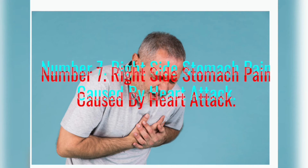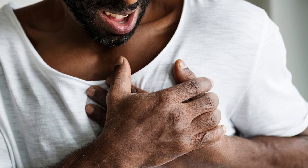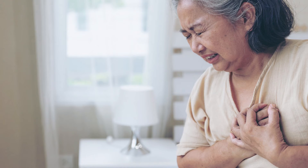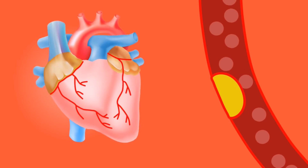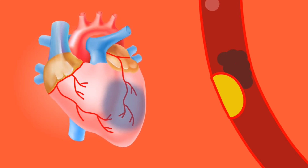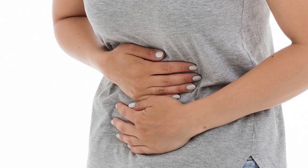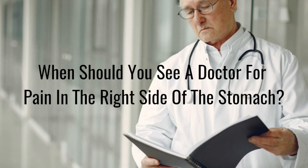Number seven: right side stomach pain caused by a heart attack. A heart attack, also known as myocardial infarction or MI, is the damage and death of heart muscle from the sudden blockage of a coronary artery by a blood clot. Blockage of a coronary artery deprives the heart muscle of blood and oxygen, causing injury to the heart muscle. In addition to pain in the right side of the stomach, this condition can cause feeling lightheaded or dizzy, nausea, coughing, or wheezing, among other symptoms.